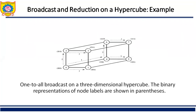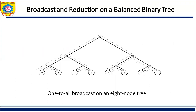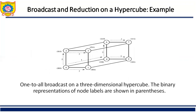Today we will see one more example: broadcast and reduction on a balanced binary tree. The hypercube algorithm for one-to-all broadcast maps naturally onto a balanced tree in which each leaf is a processing node and intermediate nodes serve only as switching nodes. As shown in this figure, there are 8 nodes, the same as in the hypercube.